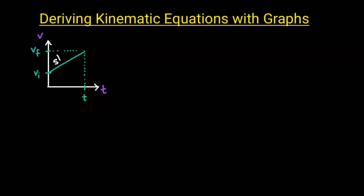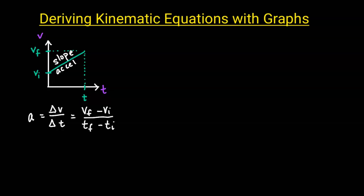The slope on a velocity versus time graph represents the acceleration. So we can write that the acceleration equals, using rise over run, the change in velocity divided by the change in time. We can write this as V final minus V initial divided by T final minus T initial. Typically the initial time is zero, so we can rewrite this as V final minus V initial divided by time.